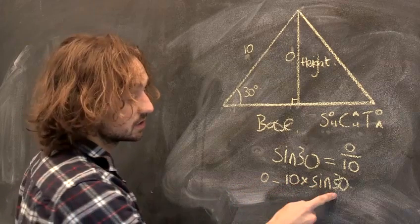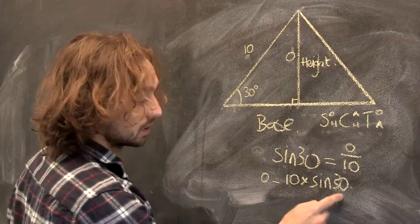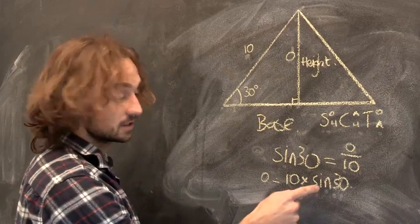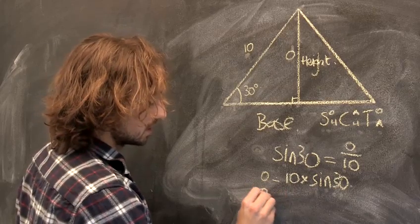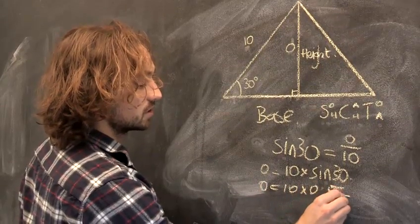Now if you put 30 into a calculator, sine 30 into a calculator, you're going to get 0.5. That's one that I know from teaching maths. So sine of 30 is 0.5. So opposite is your 10 times 0.5, which is 5.